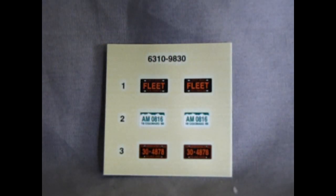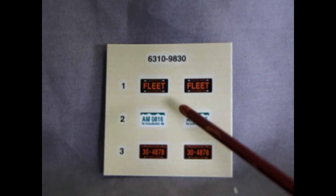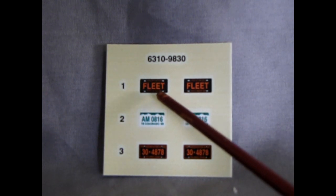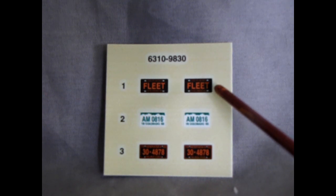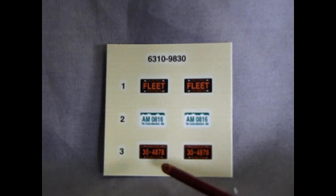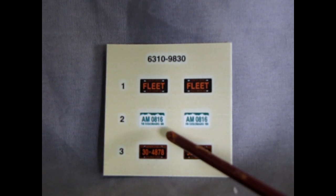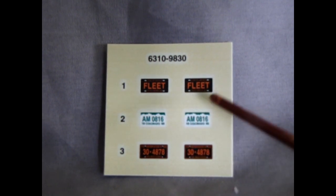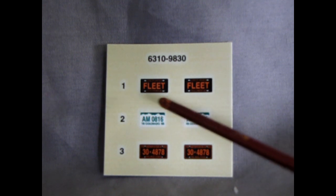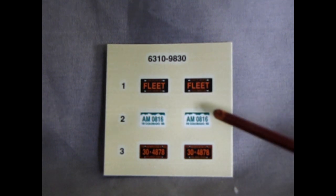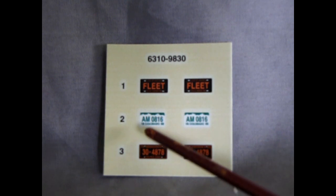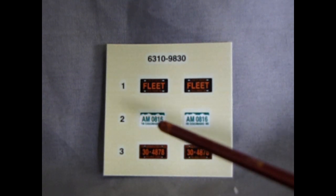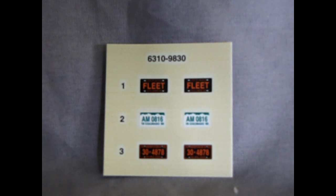And last but not least, we have our decal sheet which has just license plates. So you get these blue and orange ones that say Fleet. And then from Nebraska, 30-4878. And these Colorado ones that say AM0816. These are kind of nice because the only one that's sort of awkward is the one that says Fleet. But I've seen these things and they'll say 1960 Chevy inside there for the numbers and stuff like that. So I'm glad that it's not that kind of decal sheet, that it actually is the proper license plates.